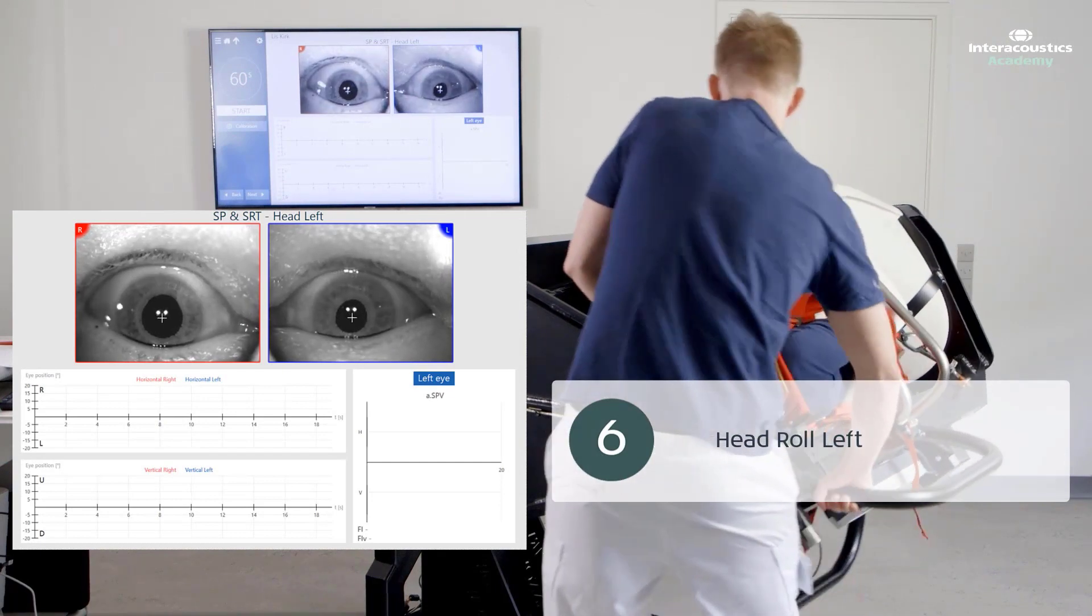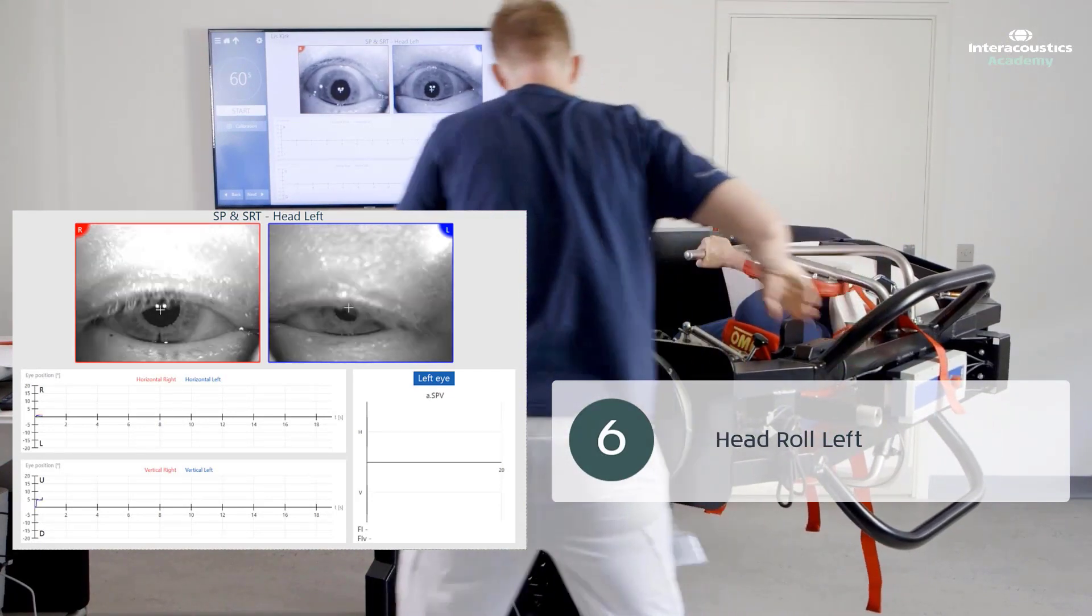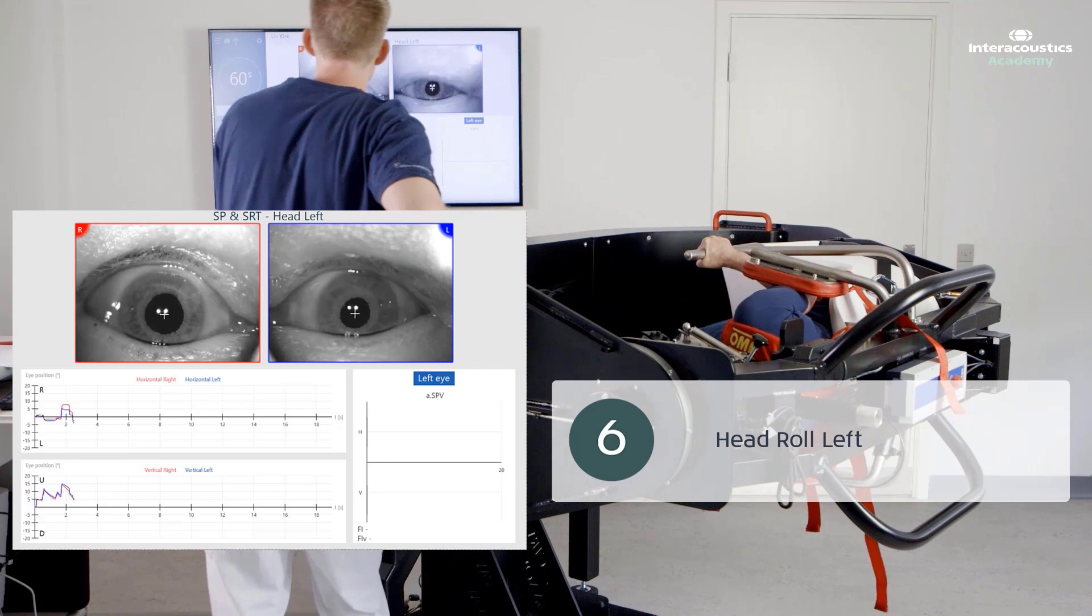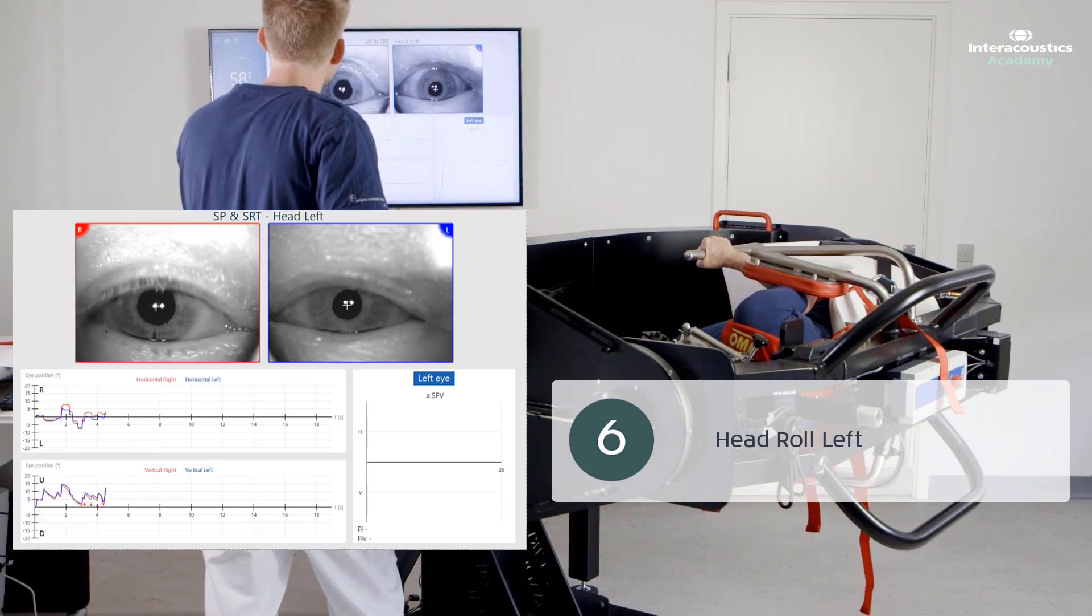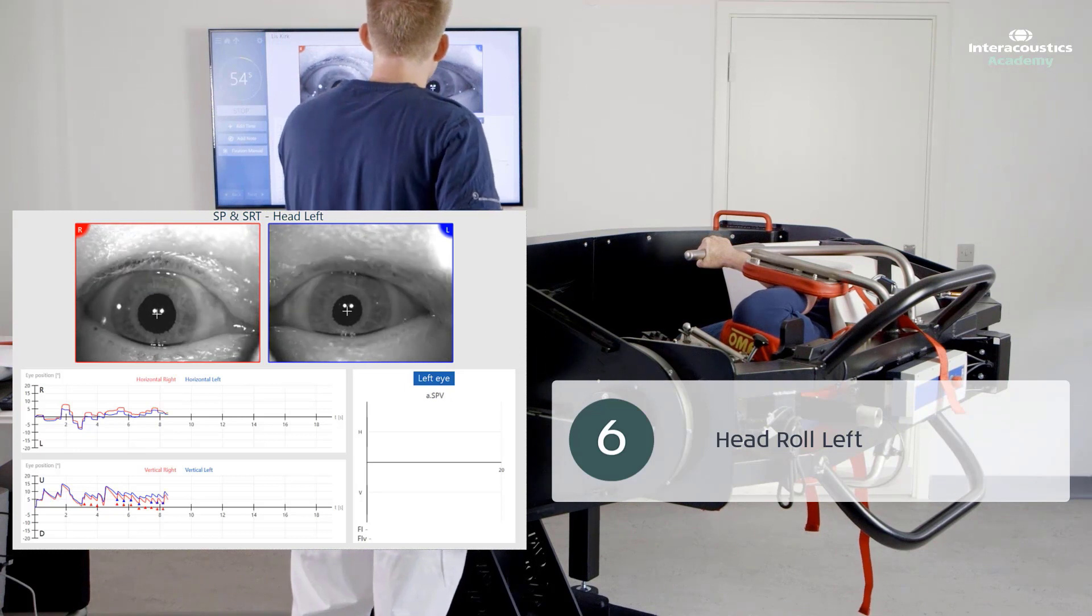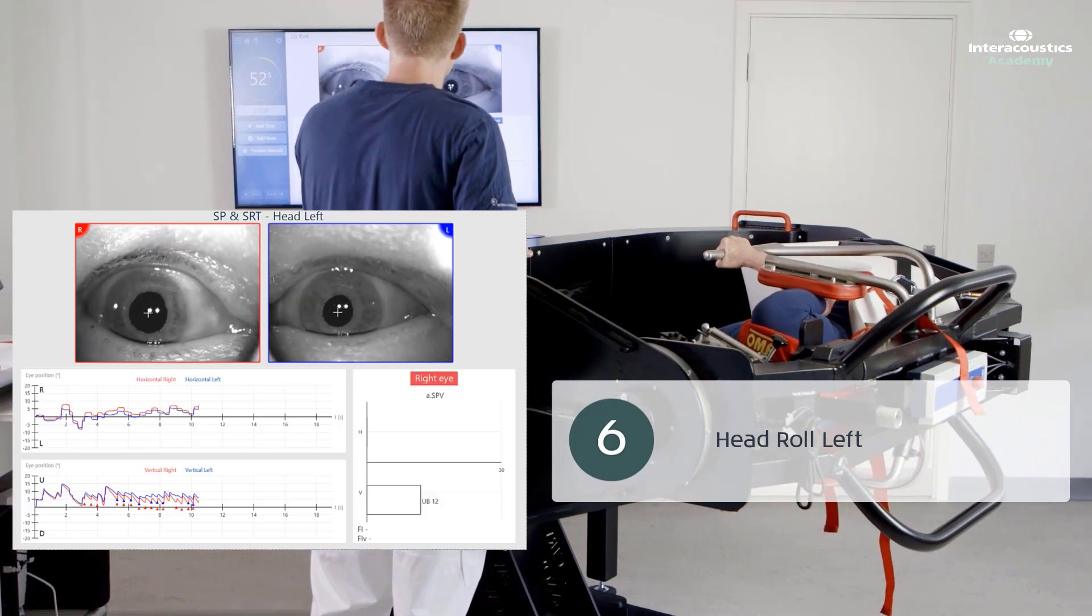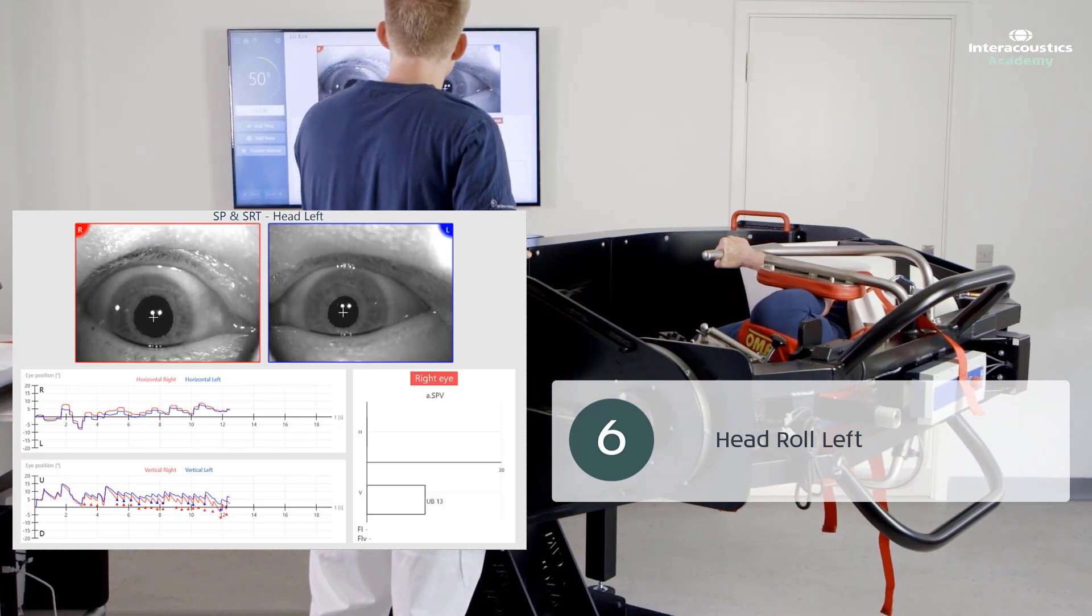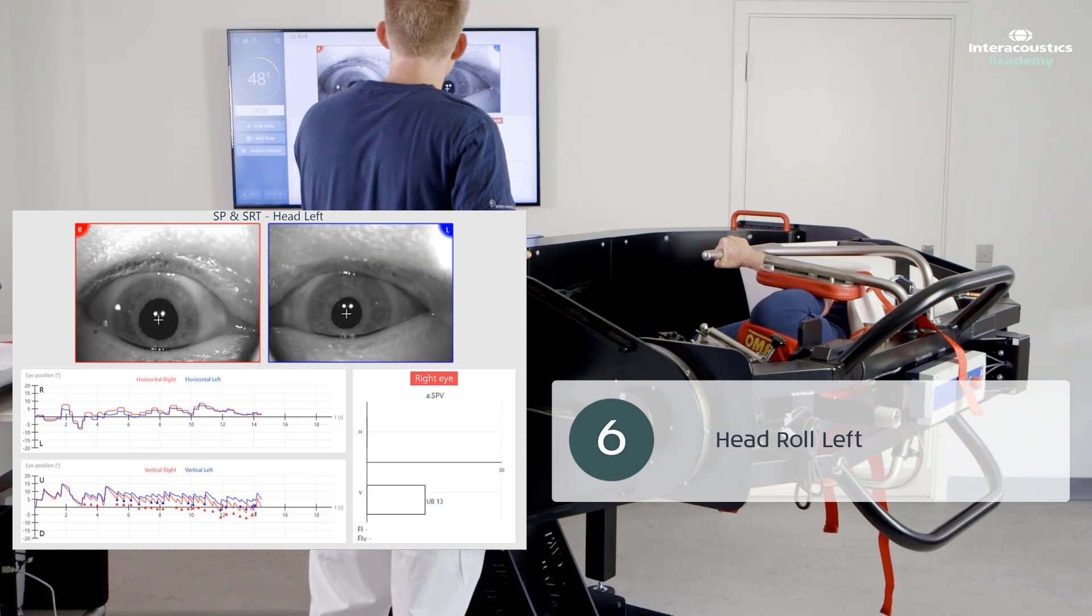With the patient in the left supine roll test position, instantaneous and persisting positional nystagmus is observed. Please also note that the observed positional nystagmus is upbeating and rotational and continues as long as the patient is kept in this test position.